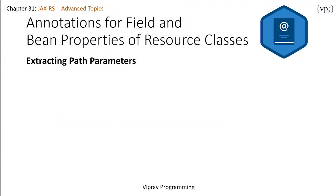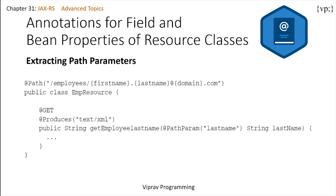Let's take a look at the annotations for field and bean properties of resource classes. JAX-RS has annotations that are used to extract specific parts from a uniform resource identifier or a request header. Let's take a look at this Java code. We have a URI path template, which are URIs that contain variables within them, like first name, last name, and domain. This code takes the last name of an employee.